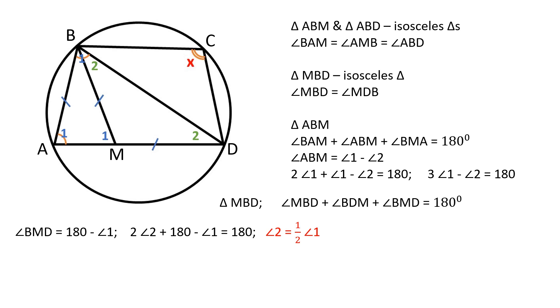Angle 2 is equal to half of angle 1. Now, we can rewrite this equation as 3 times angle 1 minus half of angle 1 is equal to 180. Angle 1 is equal to 72 degrees.